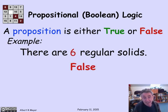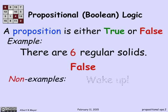If I change it to six, the assertion there are six regular solids is false. That's a simple example of two well-defined propositions, one of which is true, one of which is false. Propositions don't have to be true always.